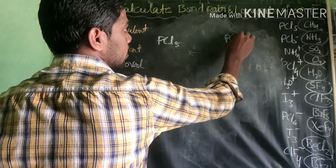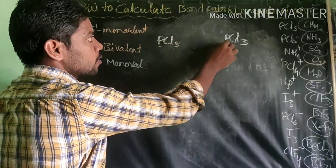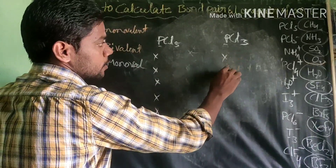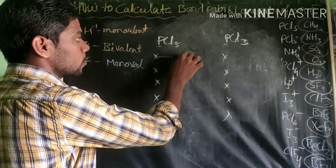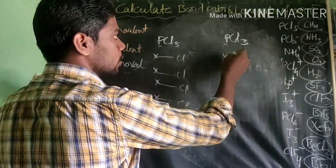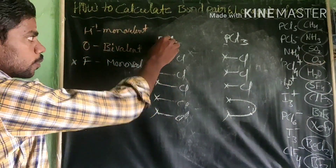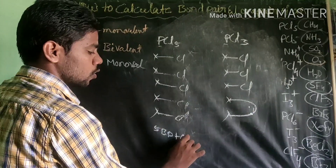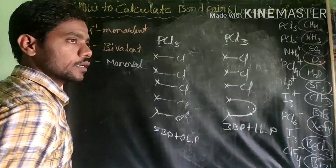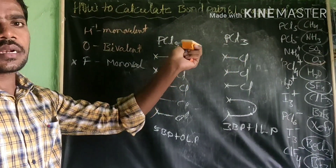Next, PCl5 and PCl3 — both have phosphorus as a 15th group element with 5 valence electrons. In PCl5, all 5 electrons are involved in bond formation with 5 chlorines: 5 bond pairs, 0 lone pairs. In PCl3, only 3 chlorines bond, leaving 2 electrons as 1 lone pair: 3 bond pairs and 1 lone pair.